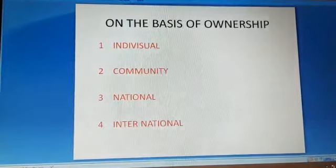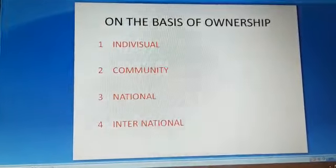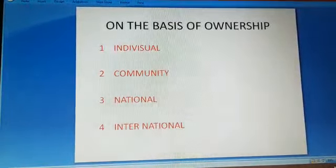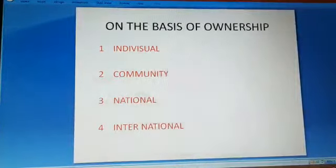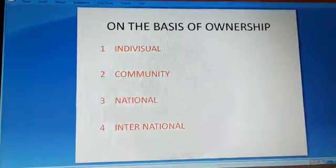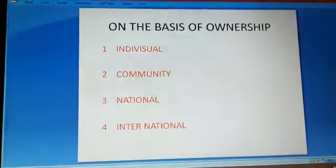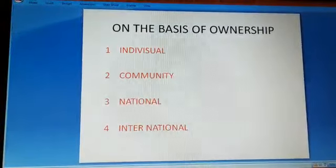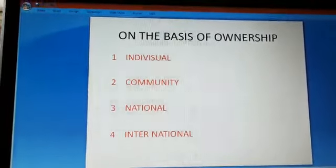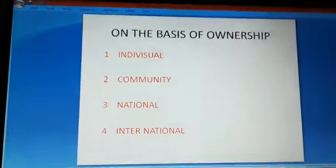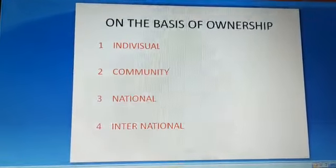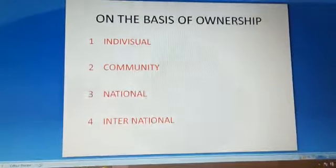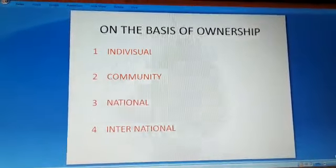Second is community resources — the resources which are accessible to all the members of a community. For example, in villages: village commons such as grazing grounds, burial grounds, and village ponds. In urban areas: public parks, picnic spots, and playgrounds are resources accessible to all members of society.